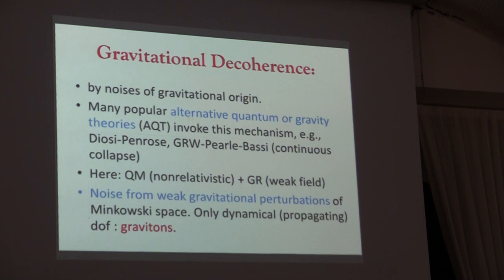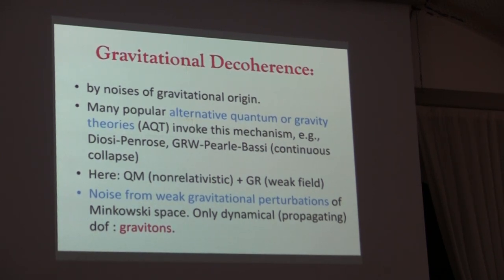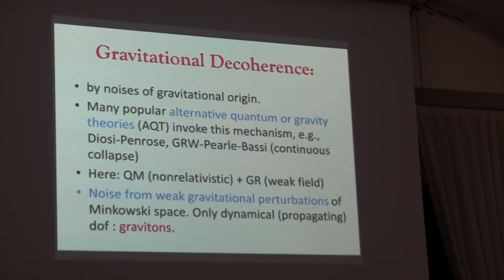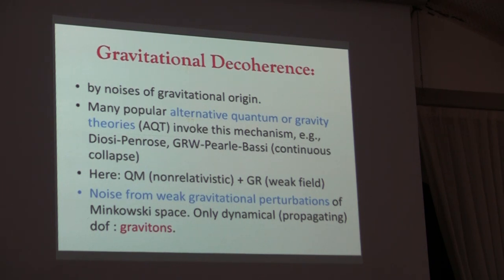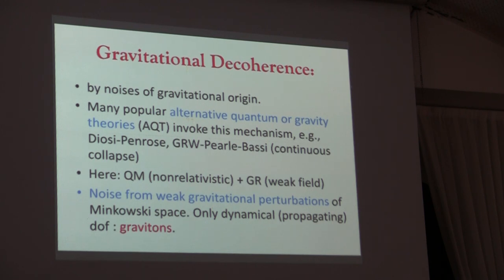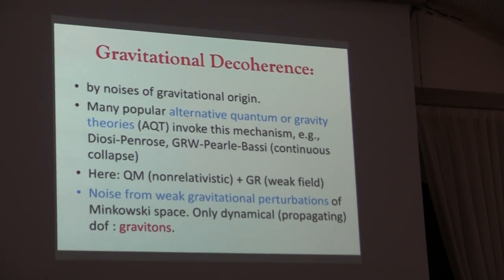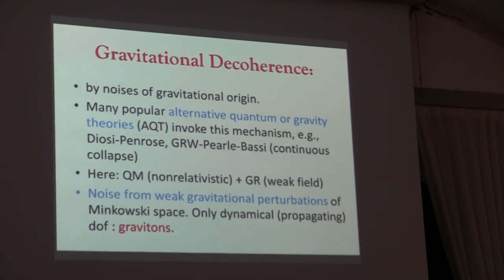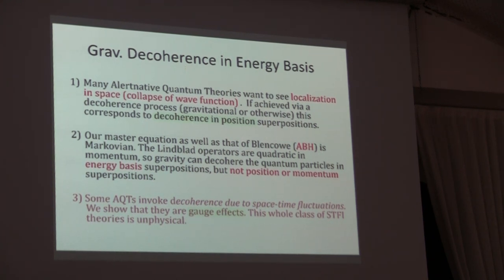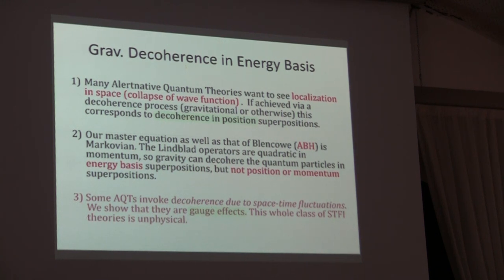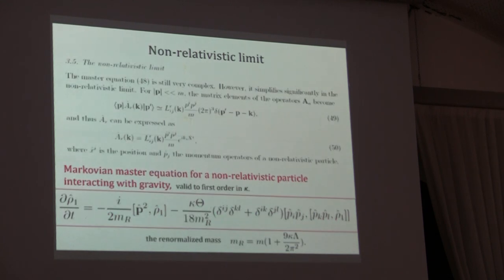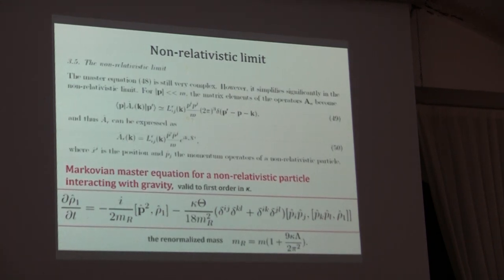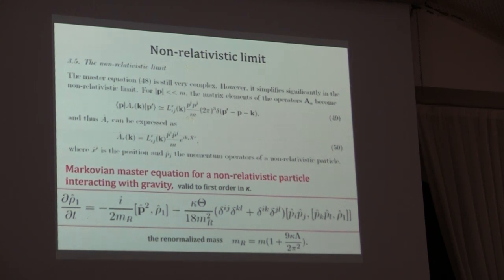Gravitational decoherence. Let me skip over the alternative quantum theory aspect. There's a lot of development since the 60s. They want to explain the collapse of the wave function. The decoherence that they want is decoherence in real space. You can see the wave function collapse at the local point. Whereas if you take general relativity and quantum mechanics, the decoherence is in energy basis.